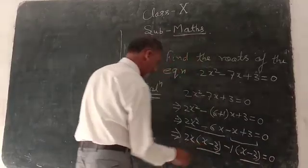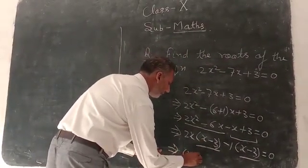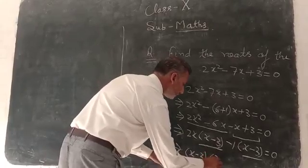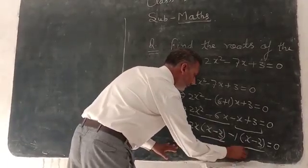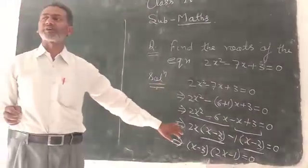Again the common, x minus 3, so you may write x minus 3 take the common, and here 2x minus 1, equal 0. In this way, factorization process is completed.